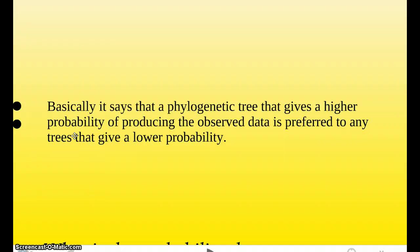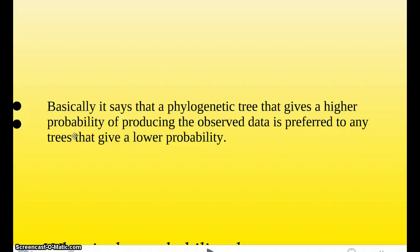Next is the maximum likelihood method. Now when I was reading about this method, boy was it confusing. But lucky for you guys, you have me to spend 15 minutes analyzing this method and figuring out what it's about. So basically what it says is, the phylogenic tree that gives the higher probability of producing the observed data is preferred to any trees that gives the lower probability. So what this is saying is, if you have two cladograms and you have all your observed data, the one that makes more sense, the one that you know is going to produce your observed data, is the one you should choose, opposed to one that has a lower probability of producing or of depicting your observed data.